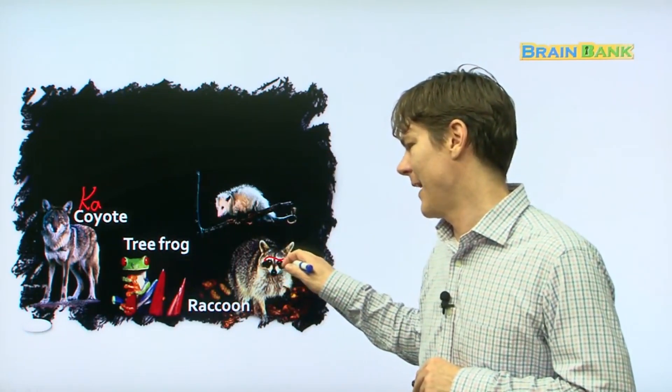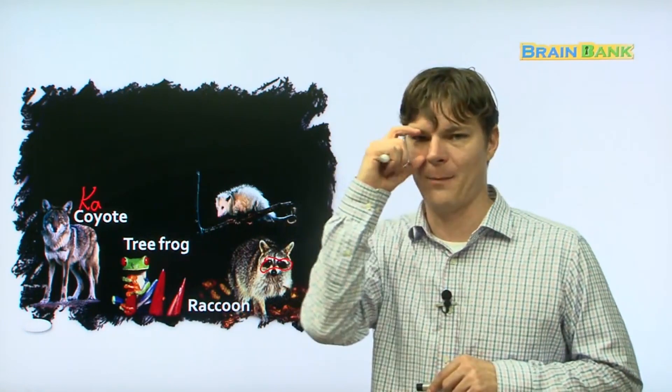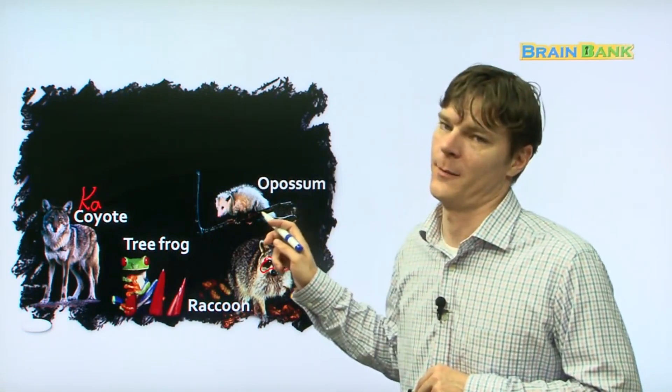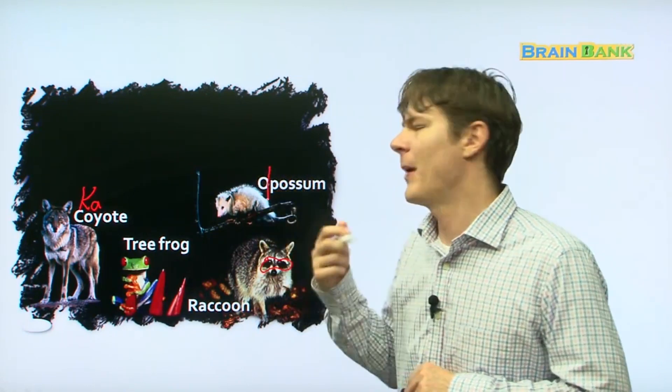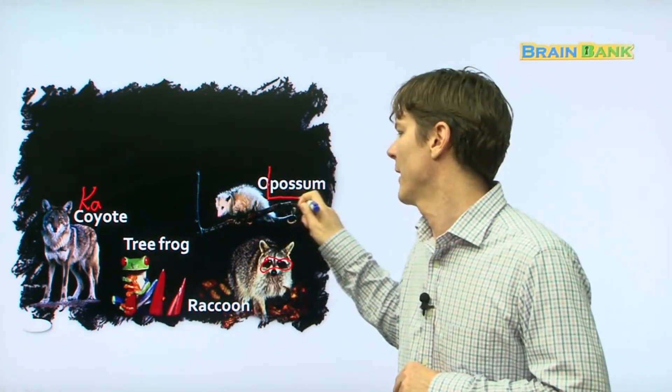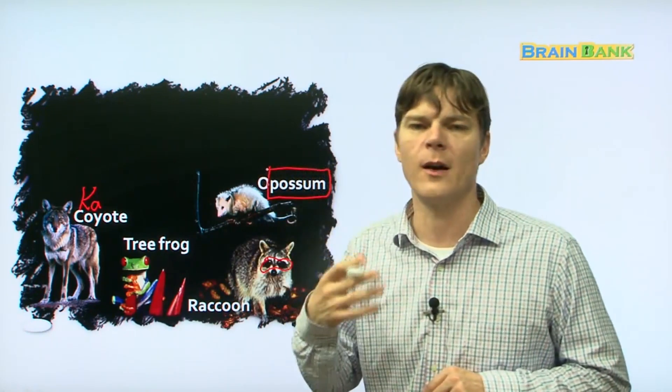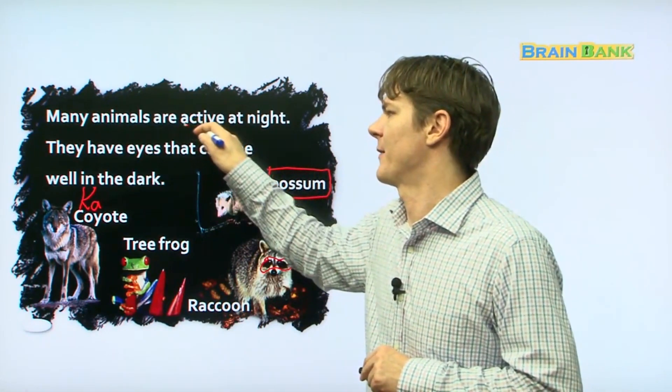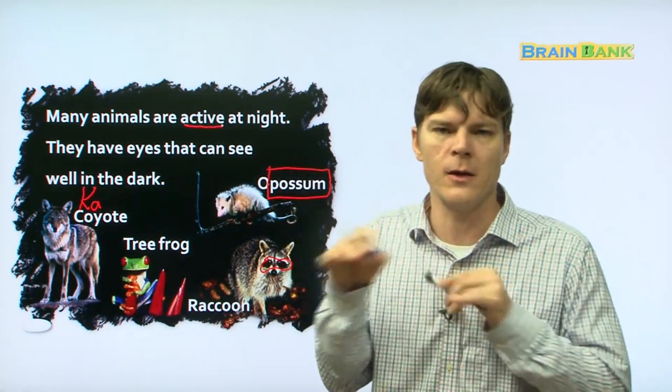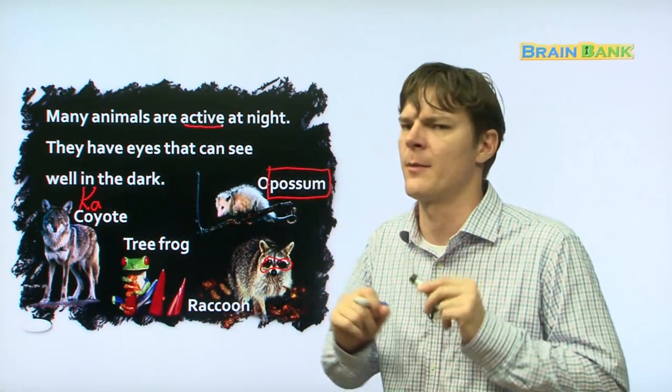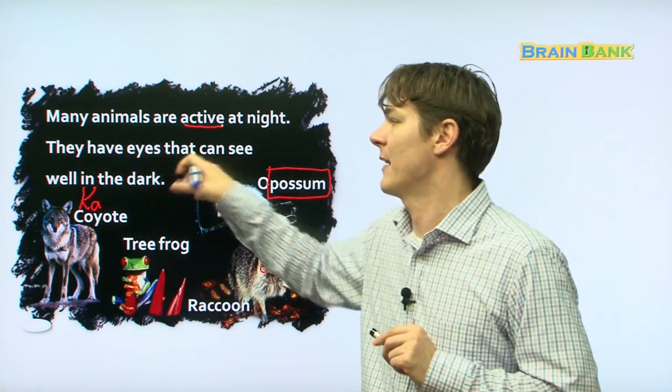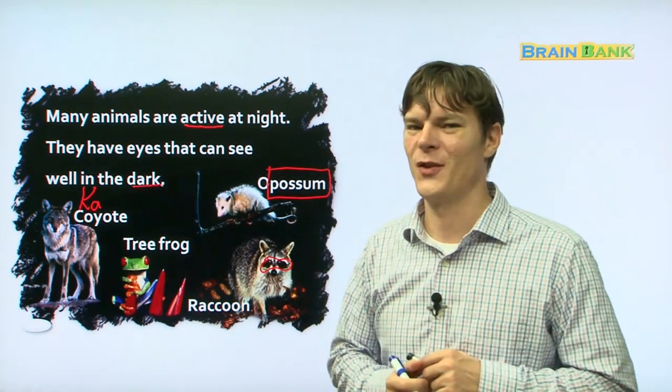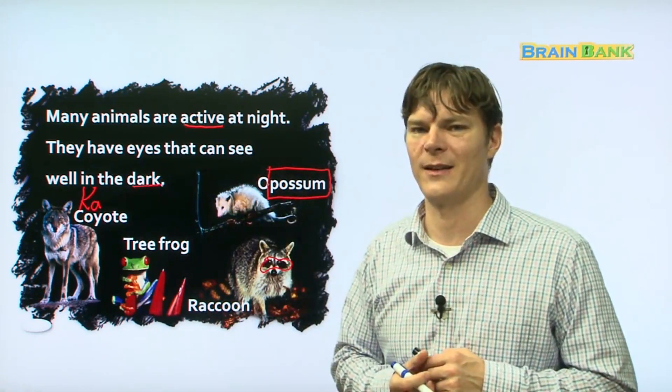And you can see around his eyes, he's got this little black band. This is kind of like a little mask that he wears. And then we have an opossum. Or sometimes we just say a possum. A possum can see very well in the dark. And they are mostly awake only at night time. So, many animals are active at night. That means they do a lot of things at night. They have eyes that can see well in the dark.